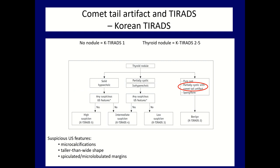Let's see the role of these intranodular hyperechoic figures in the various thyroid TIRADS systems. The only one is the current TIRADS which mentions comet tail artifacts, and this system has a very strong argument: if we see comet tail artifacts, the nodule should be grouped among benign lesions irrespectively of all other potentially suspicious signs, because comet tail artifacts significantly decrease the risk of malignancy. Nevertheless, the possibility cannot be fully excluded. No other TIRADS shares this view.